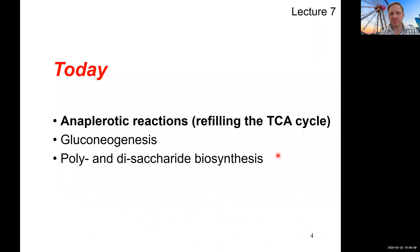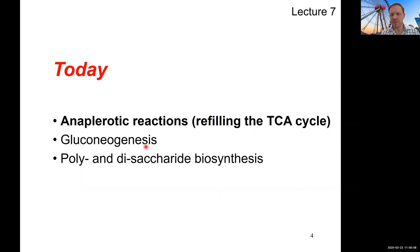Welcome everyone to lecture 7 of BIS 103. Today we want to follow up on our discussion on the TCA cycle from lecture 6 and look at how we can refill the TCA cycle if we are siphoning off some of its intermediates. In addition, today we want to look at gluconeogenesis, or how we can biosynthesize glucose, as well as a separate video on how we can form poly and disaccharides from glucose and other sugar monomers.